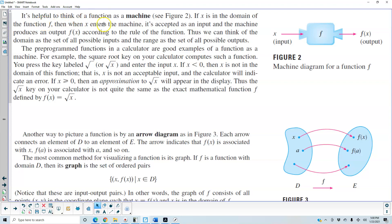Now it's helpful to think of a function as a machine. If we take a look at figure 2, in figure 2 we have x that represents the input. The input goes into the function and then what you get is f of x which is the output. If x is in a domain of the function f then when x enters the machine it's accepted as an input and the machine produces an output f of x according to the rule of the function. Thus we can think of the domain as a set of all possible inputs and the range as the set of all possible outputs.